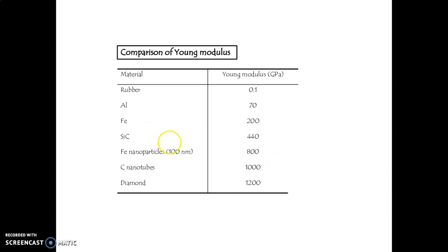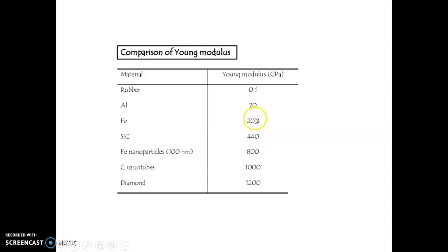Comparison of the Young's modulus: for rubber material, we get Young's modulus of 0.1 GPa; for aluminum, 70 GPa; for iron, 200 GPa; for silicon carbide, 440 GPa. But for iron nanoparticle at 100 nm, we get 800 GPa. When you move to carbon nanotubes, we get 1000 GPa, and for diamond, 1200 GPa.